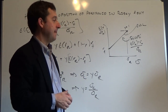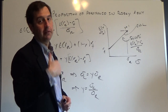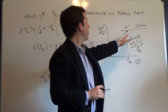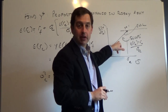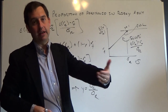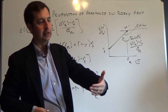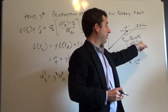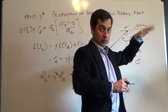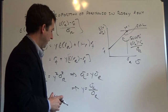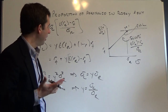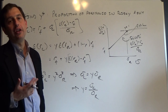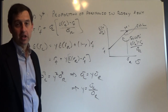Now that we have a graphical representation of our opportunity set, the question is: where on this line do we invest? We invest at the point where we maximize utility. Recalling our utility function: U = E[R] − ½·A·σ², we plug in the expected return and variance of our complete portfolio. This gives: U = R_f + Y·(E[R_p] − R_f) − ½·A·Y²·σ²_p. We want to maximize this utility by choosing Y.